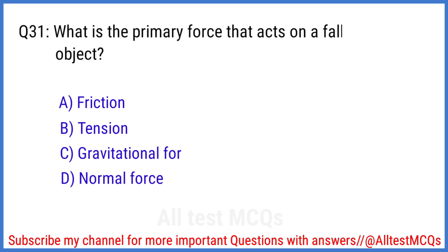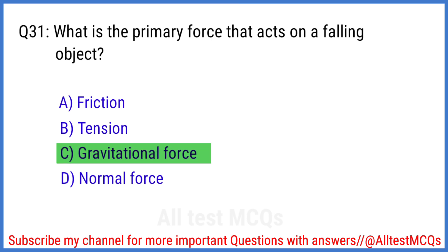Q31. What is the primary force that acts on a falling object? The right answer is option C. Gravitational force.